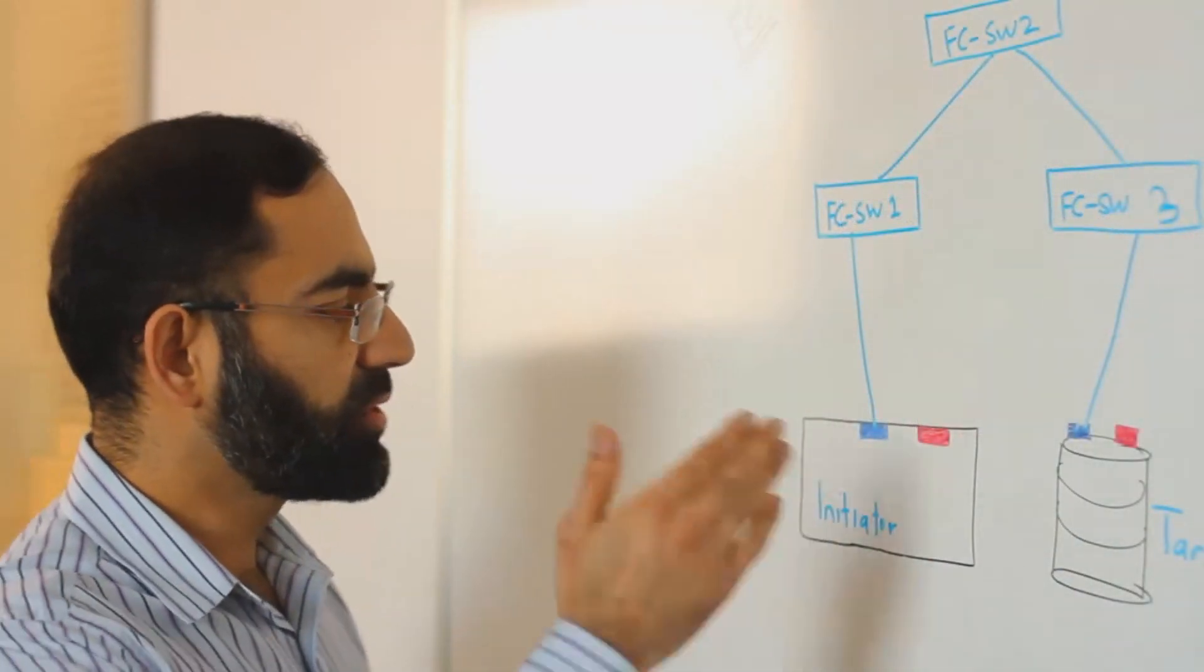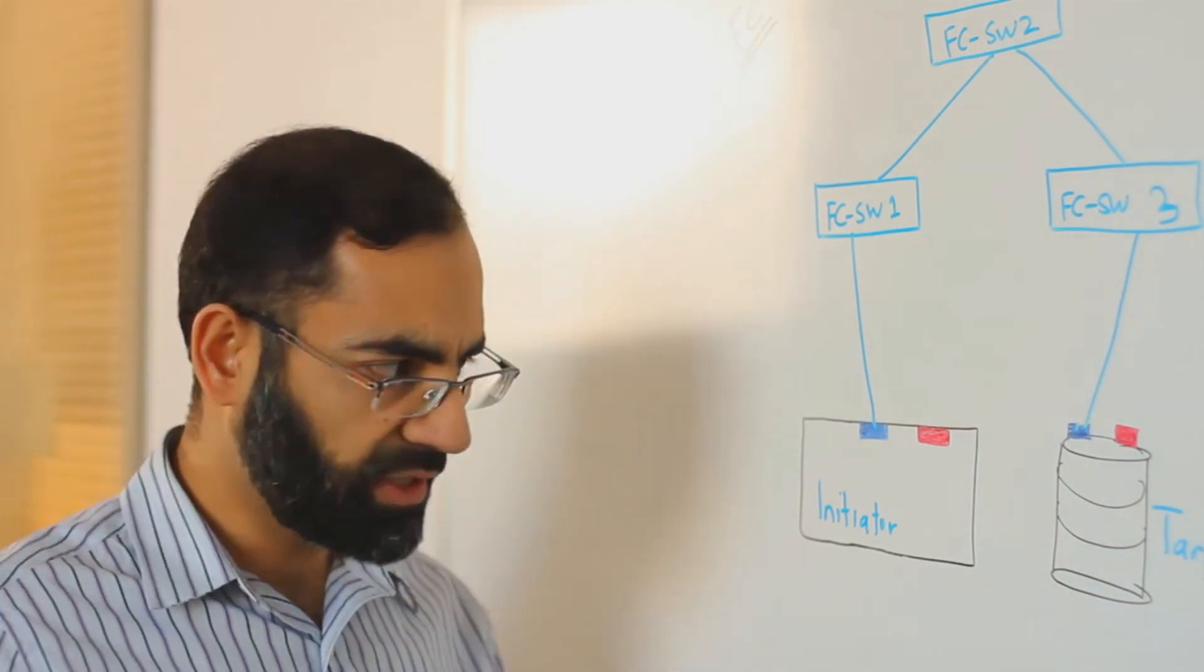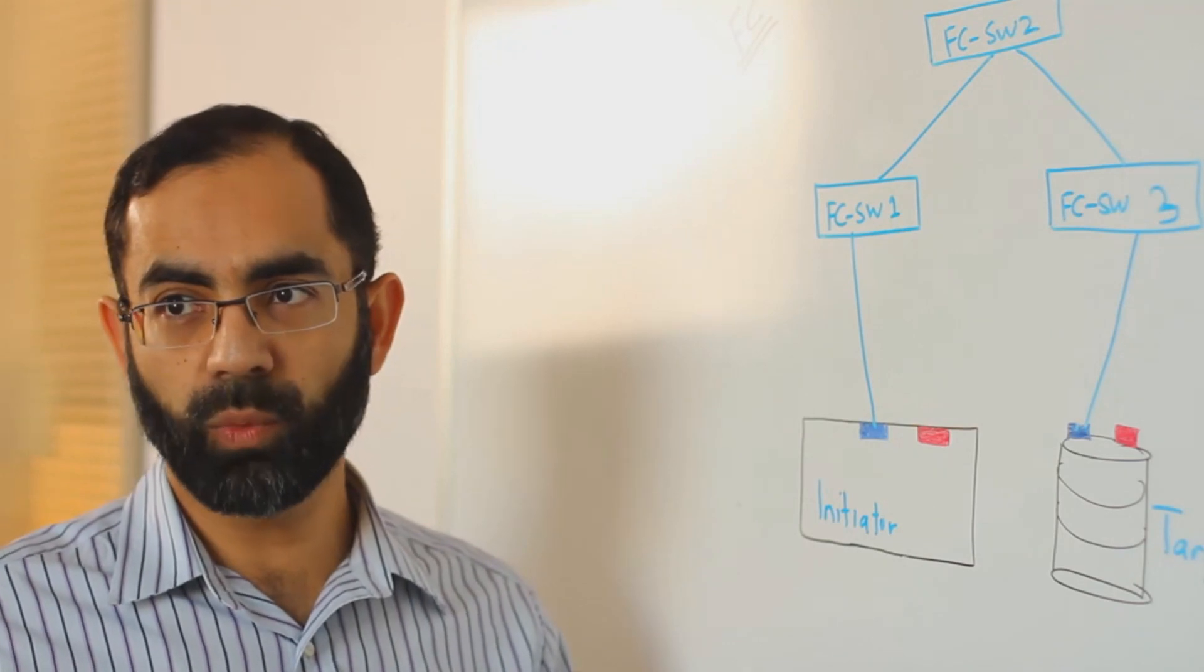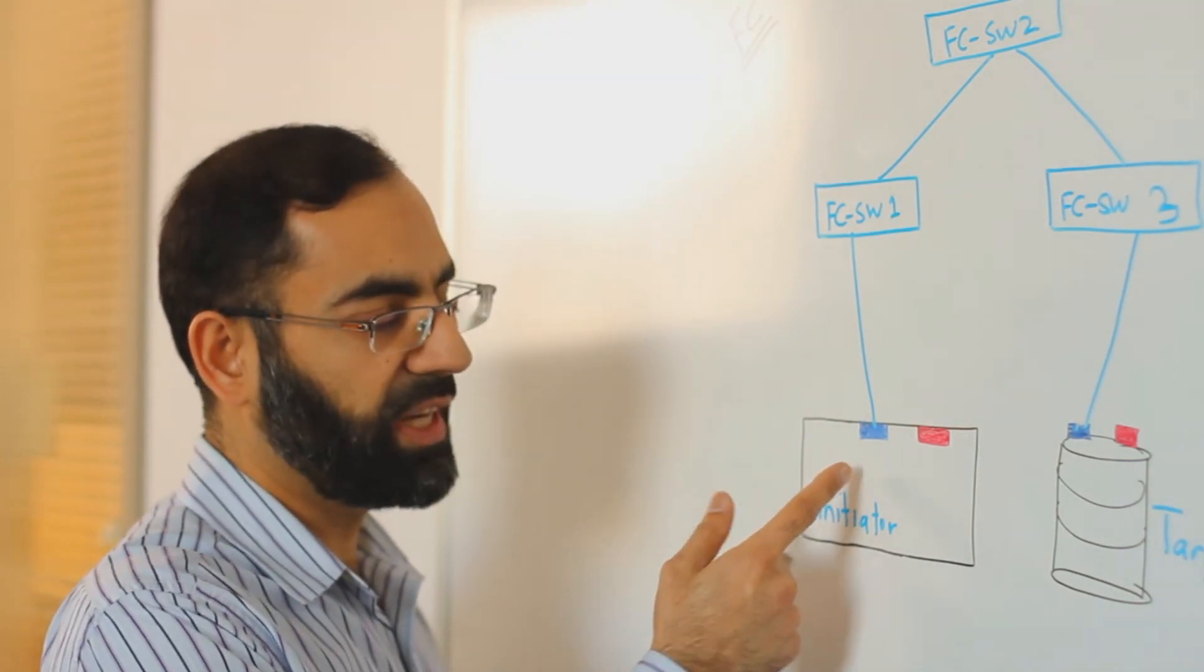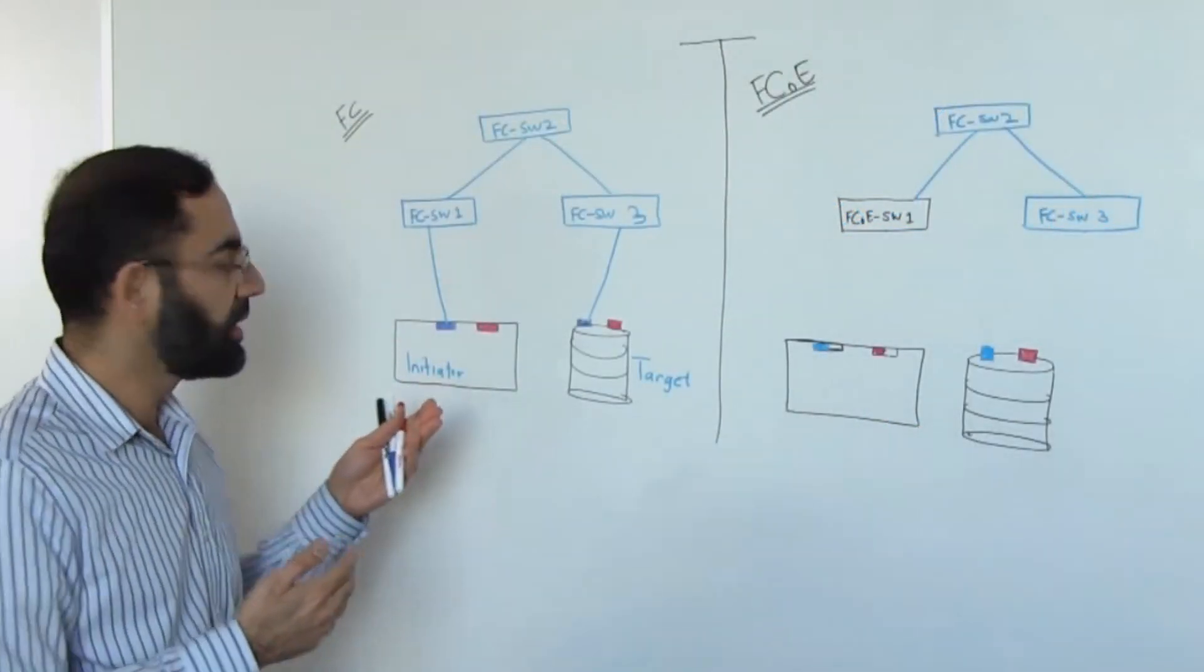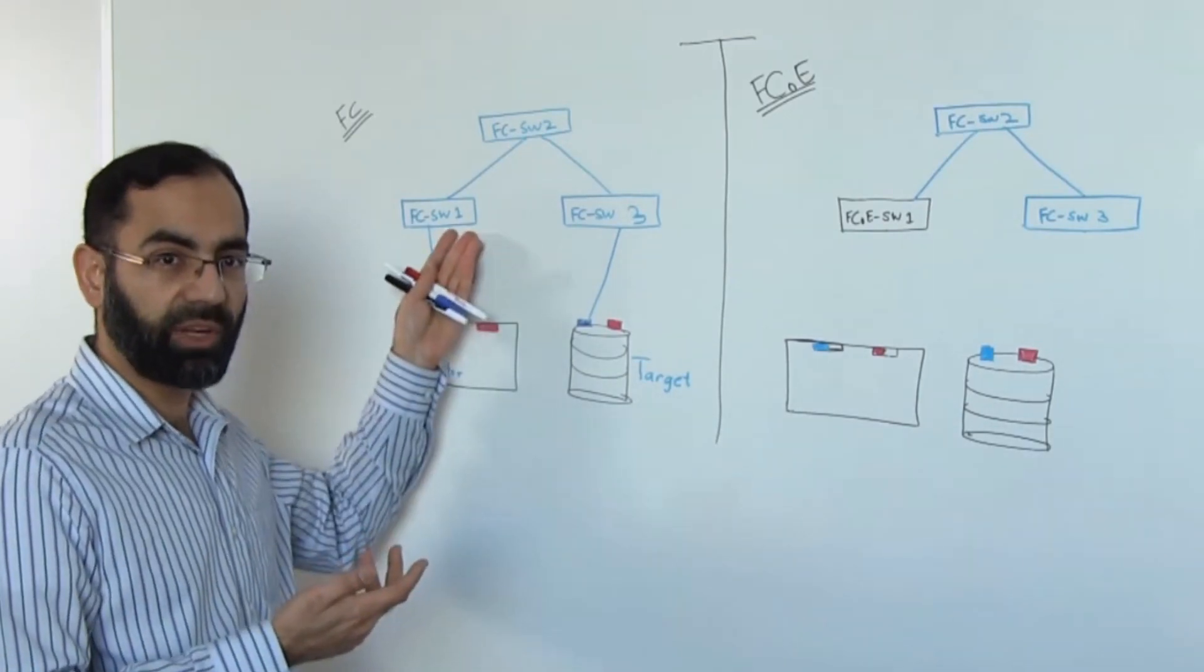On a typical server, we have a NIC. It could be 10 gig, 1 gig, or more. And we have HBAs, host-based adapters. NICs are connected to LANs using Ethernet, HBAs or host-based adapters are connected to FC fabric.